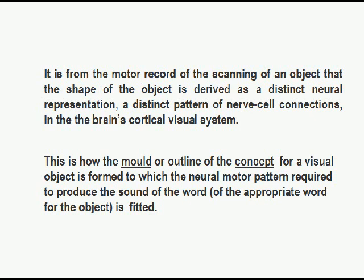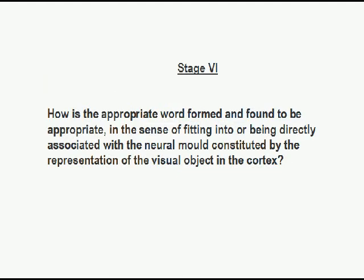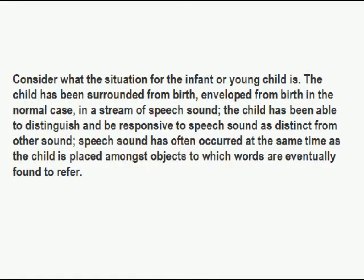It is from the motor record of the scanning of an object that the shape of the object is derived as a distinct neural representation — a distinct pattern of nerve cell connections in the brain's cortical visual and motor systems. This is how the mould or outline of the concept for a visual object is formed, to which the neural motor pattern required to produce the sound of the appropriate word for the object is fitted. Stage 6: how is the appropriate word formed and found to be appropriate, in the sense of fitting into the neural mould constituted by the representation of the visual object in the cortex?